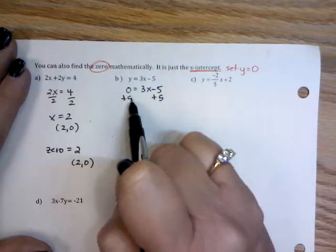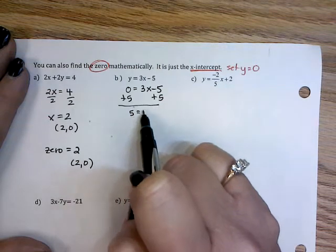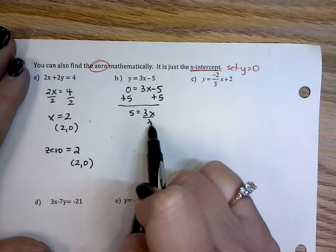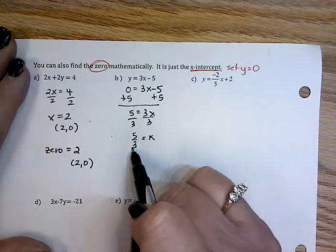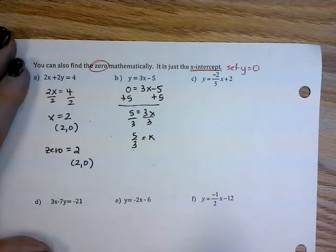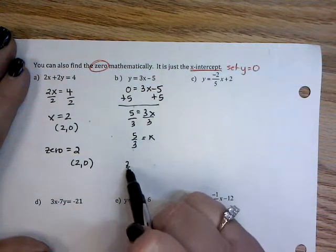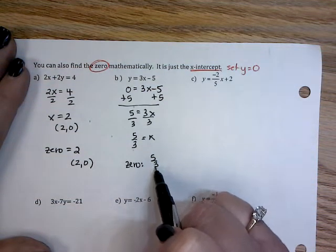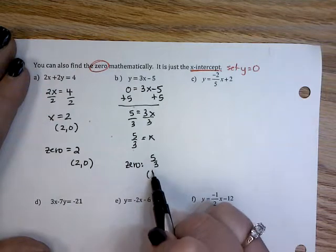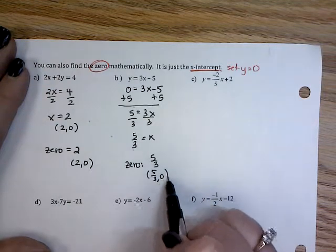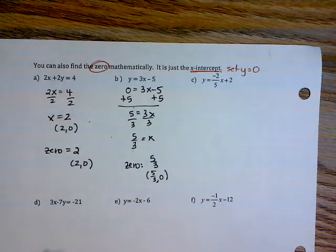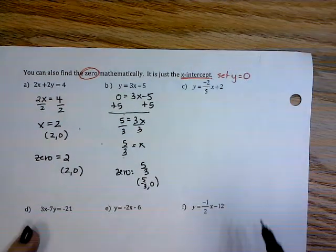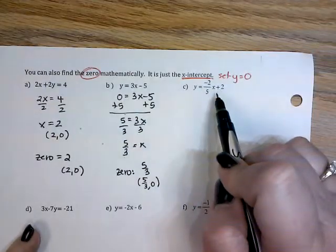On example B, I'm finding my x-intercept, so therefore my y is 0. I'm going to solve for x. I'm not going to make some silly ridiculous repeating decimal. I'm going to keep fractions because fractions are good. So my zero is 5 thirds, or I could write the ordered pair (5/3, 0) because y is 0 and my zero is my x-intercept.